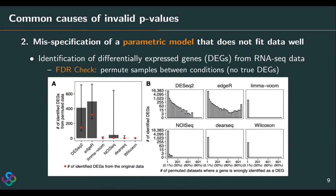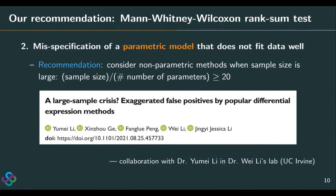This echoes a very interesting message: when our sample sizes are actually large enough, we don't necessarily need to use a parametric model at the risk that it might not fit the data well. Instead, we can leverage classical nonparametric methods to achieve very good performance. This analysis echoes the importance of using an appropriate method based on sample size and sample properties, not just based on the popularity of the method itself. This is a collaboration with Dr. Yu Mei Li from Dr. Wei Li's lab at UC Irvine.